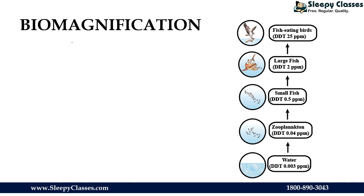It is a well-known phenomenon for DDT and mercury. DDT is an insecticide we use in agricultural fields, and it enters water bodies through runoff. DDT is a non-biodegradable pollutant, meaning it does not degrade — it only accumulates. The concentration in water is 0.003 ppm, but when plankton consume it, the concentration increases.